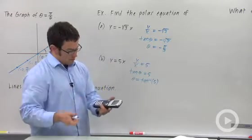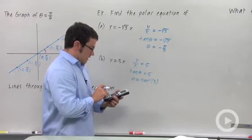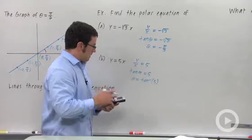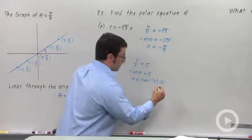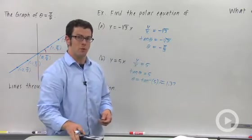Now if you want something that's a little more numbery, you can use your calculator to get inverse tangent of 5. And it's approximately 1.37. So theta equals approximately 1.37.